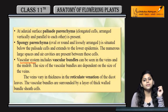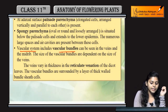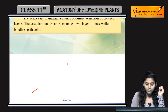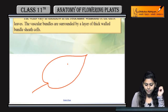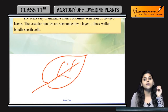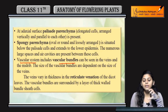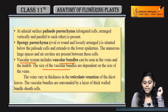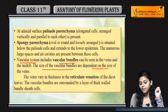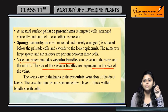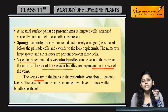अब जो ये vascular system है और vascular bundles जो हैं, ये कहां दिखते हैं leaf में? जब आप leaf की veins देखोगे, वहां vascular bundle — xylem, phloem, bundle sheath present होगा। Size of the vascular bundle is dependent on the size of veins। Veins vary करती हैं in thickness।